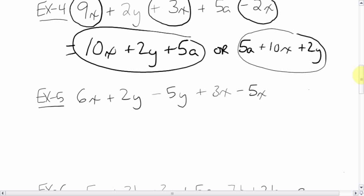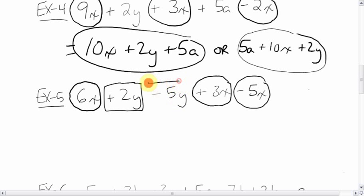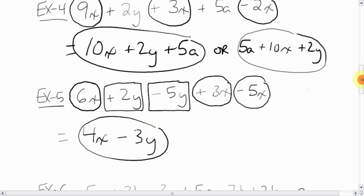Example five. Let's take a look here. Some more negative signs. Let's collect all the X's together. Let's put circles around the X's. 6X circle, 3X and the sign in front of it, negative 5X and the sign in front of it. And we get some Y's. Let's put a square around the Y's and the sign in front of it. 6X plus 3X is 9, minus 5X, 4X. And then, with the Y's, 2Y minus 5Y. 2 minus 5. You have 2, you're down 5. You're down 3Y. So the answer in this one is 4X minus 3Y.